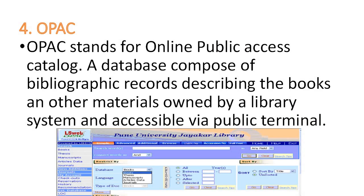Next is OPAC. OPAC is another form of catalog and it is basically an Online Public Access Catalog — a database composed of bibliographic records describing the books and other materials owned by a library system, accessible via public terminal. This is a type of catalog accessible through computer, and users of libraries can get access to library materials through OPAC.